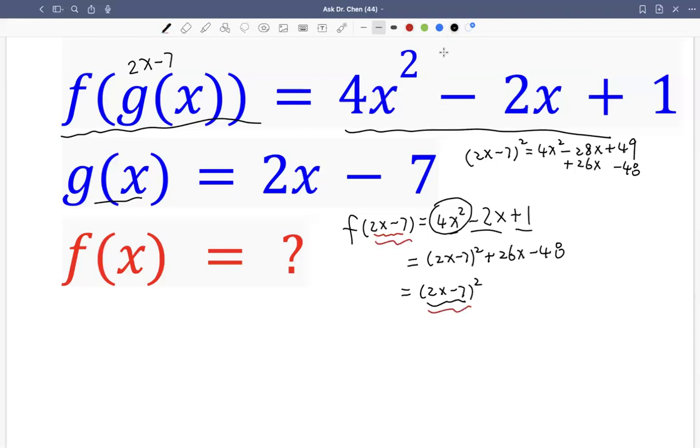Now we want to rewrite the linear term. Linear term involves 2x minus 7. So 26x we can write as 13, factor out 13. Then we have 2x and we want to write as 2x minus 7. So 13 times 2x minus 7, we get negative 91. But we only have negative 48. So plus 48 gives us 43. Right, so we have to add 43 into this.